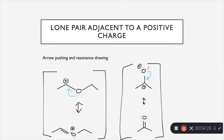In the second example, you again see that positive charge adjacent to the lone pair, with one arrow that moves the lone pair towards that positive charge. Always check your formal charges after doing the arrow pushing.